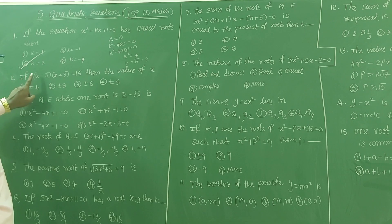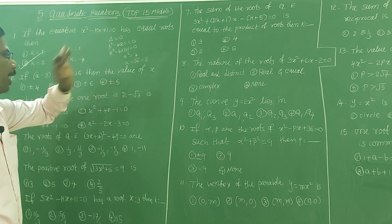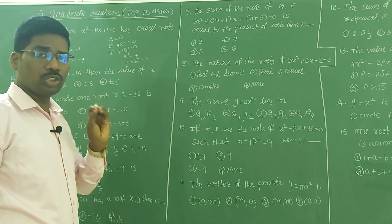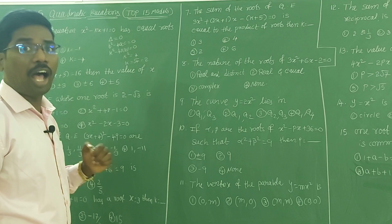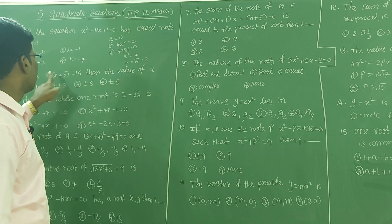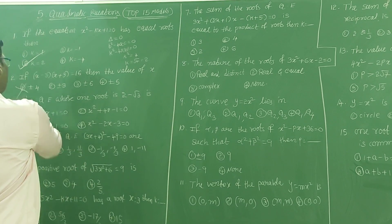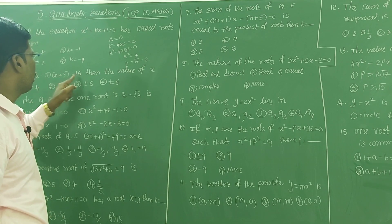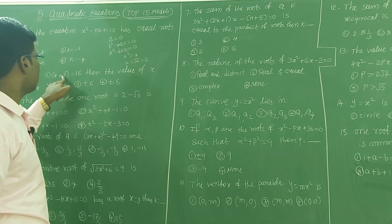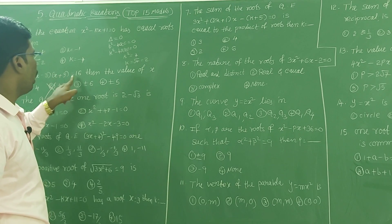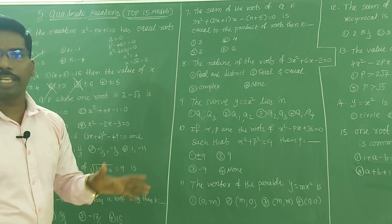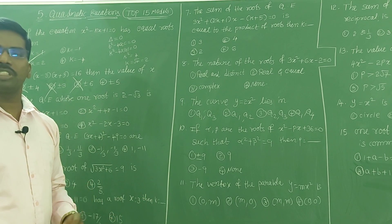If (x-3)(x+3) = 16, find the value of x. For this type of problem, do not solve as we do in 10th class — use the options method. Substituting 4: (1)(7) = 7, wrong. Substituting 3: (0)(anything) = 0, wrong. Substituting 6: (3)(9) = 27, wrong. If three options are wrong, the fourth option must be correct without checking.